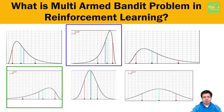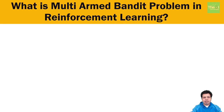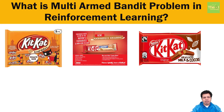One good real-world use case of the multi-armed bandit problem is advertising. Consider a company like KitKat that sells chocolate-based products and wants to run a campaign to increase sales, so they create several ads. They have three ads and want to find out which is the best performing one so they can use it to maximize their return on investment.